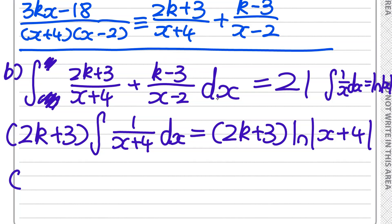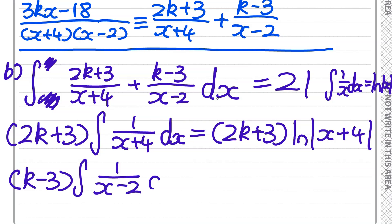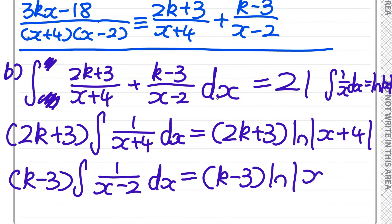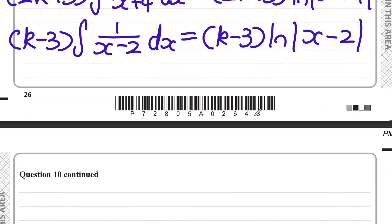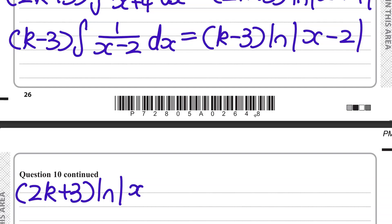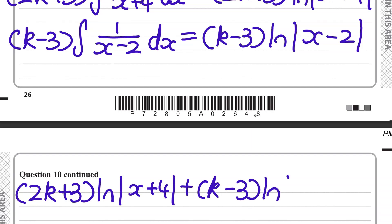For (k − 3)/(x − 2), take (k − 3) out of the integral. Integrating 1/(x − 2) gives ln|x − 2| — again no coefficient in front of x so no division needed. Combining both terms, the integral is (2k + 3) ln|x + 4| + (k − 3) ln|x − 2| + c.